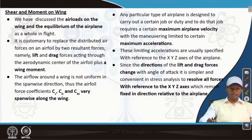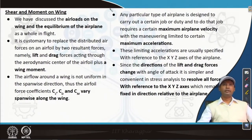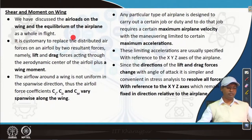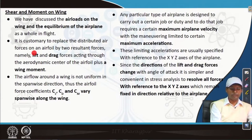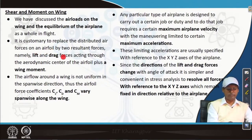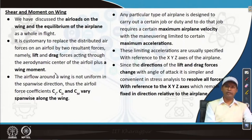As already discussed, we have discussed the air loads on the wing and the equilibrium of the airplane as a whole in flight. It is customary to replace the distributed air forces on an airfoil by two resultant forces — lift and drag — acting through the aerodynamic center of the airfoil, plus a wing moment. For a structural engineer, we get the two forces lift and drag and one moment, and from those we need to find out stresses in component members and design accordingly.